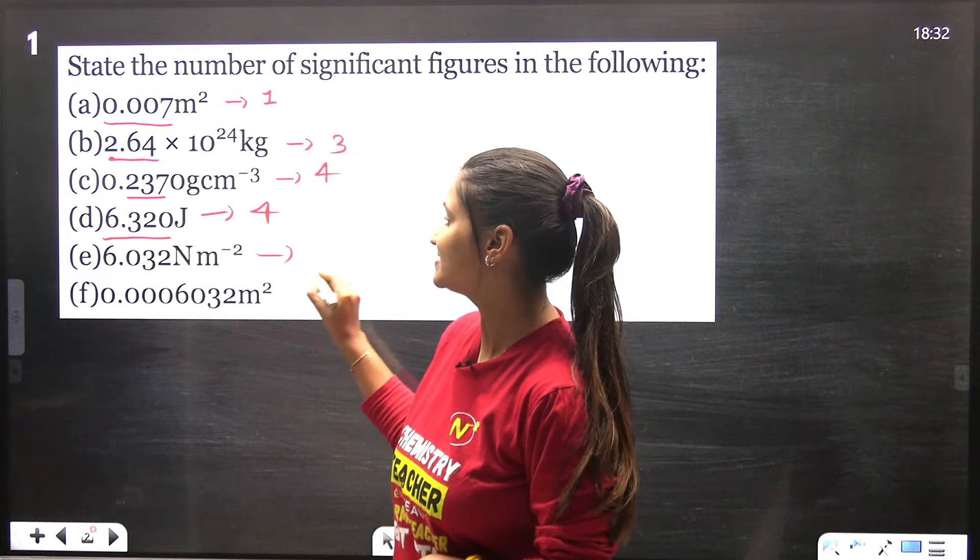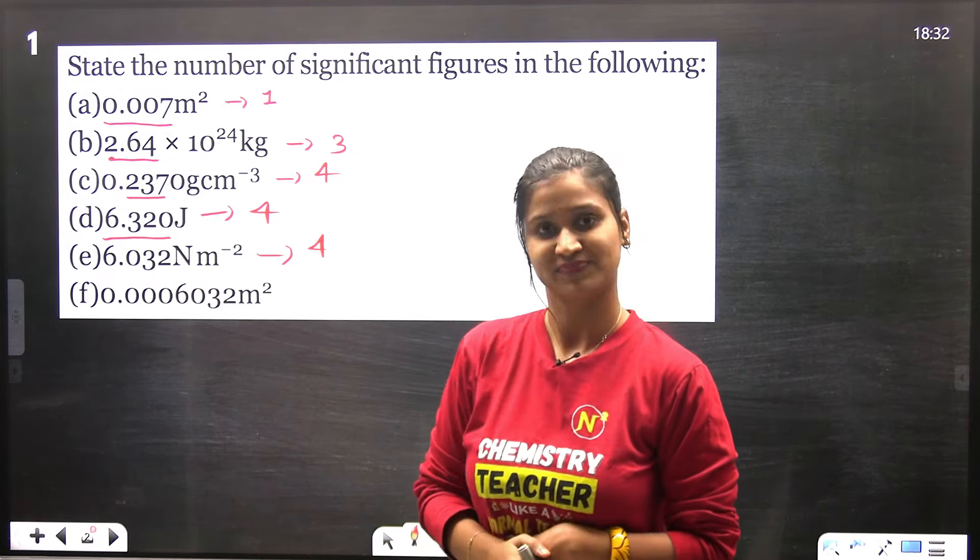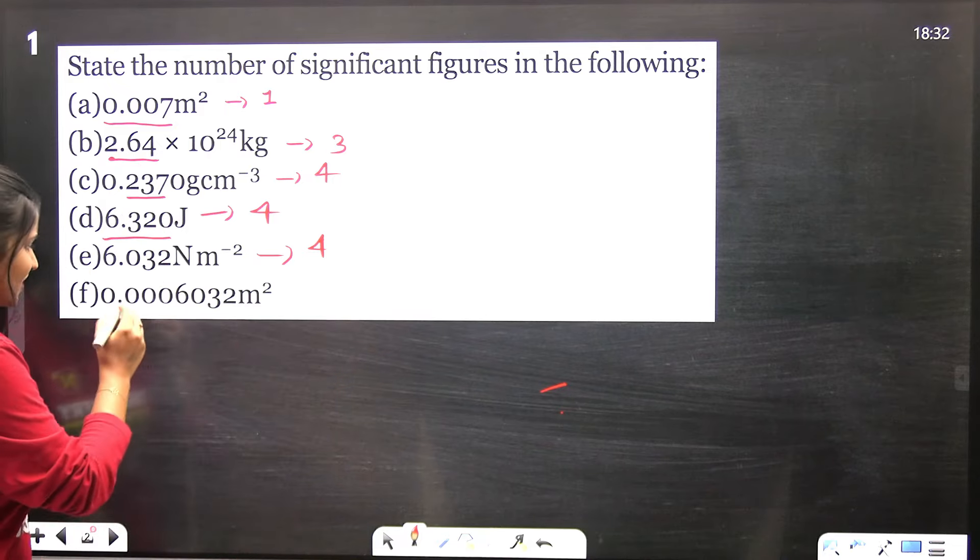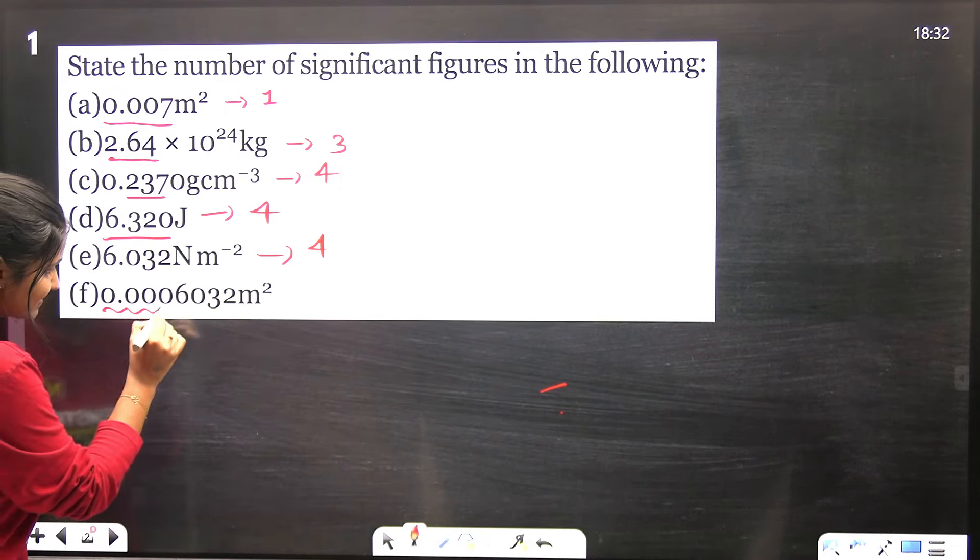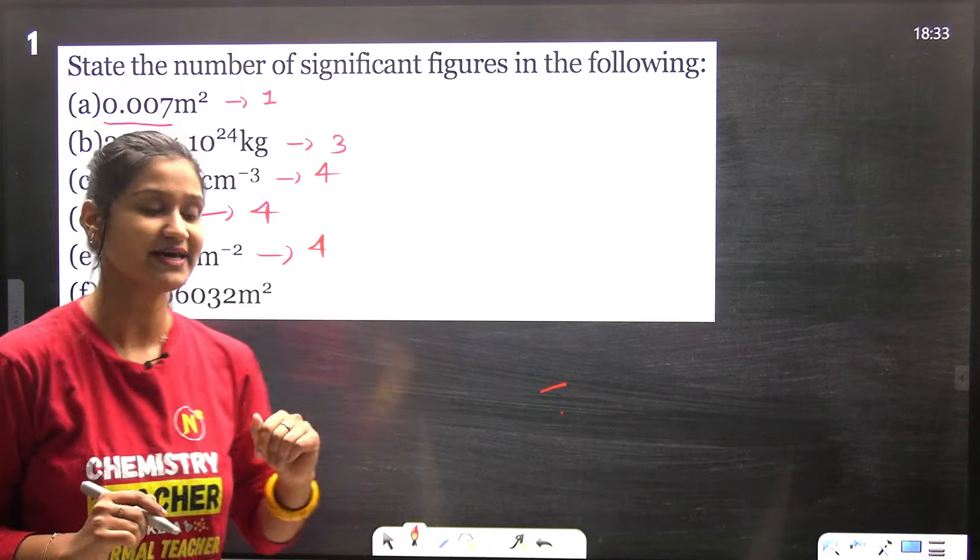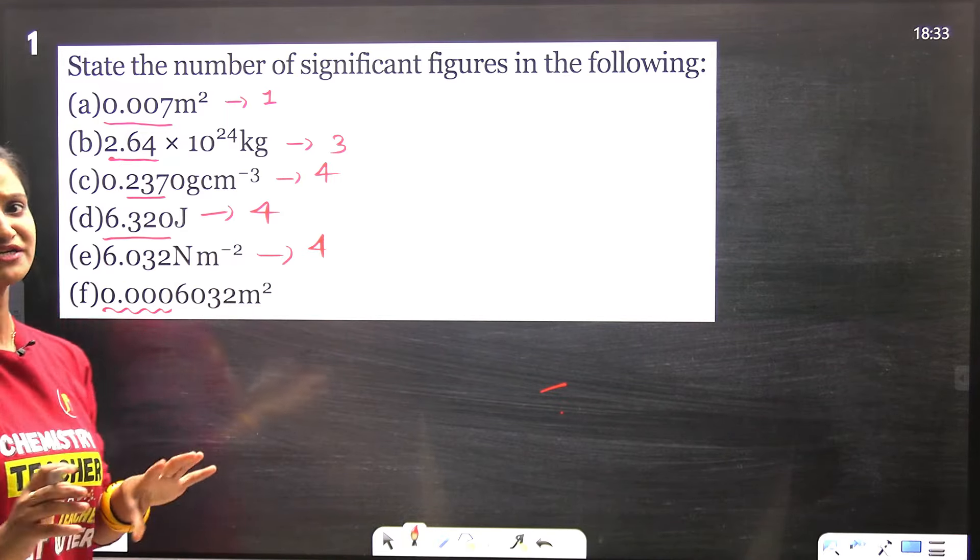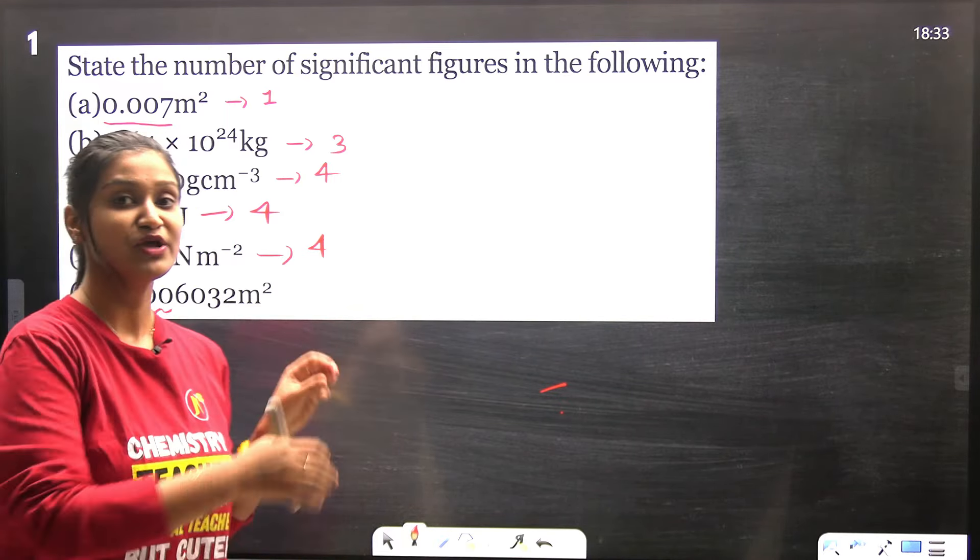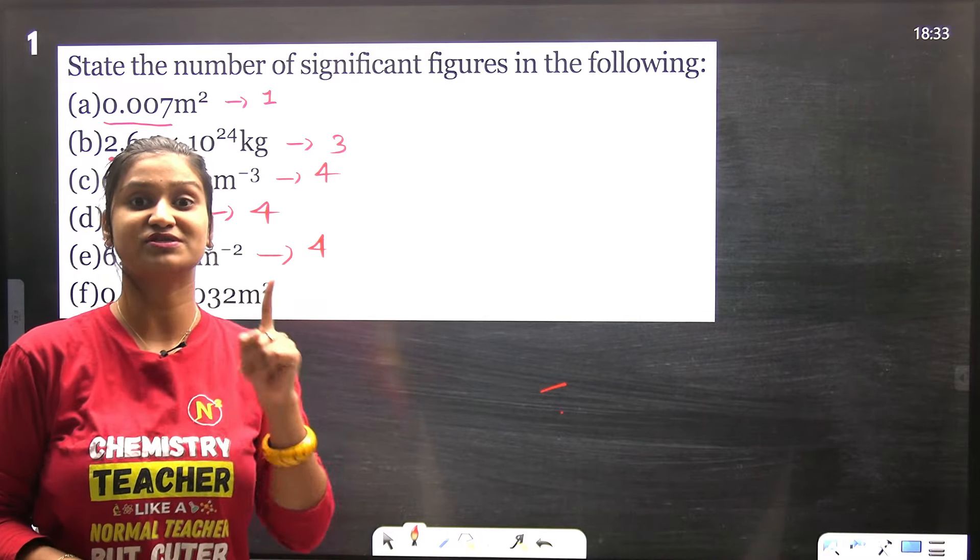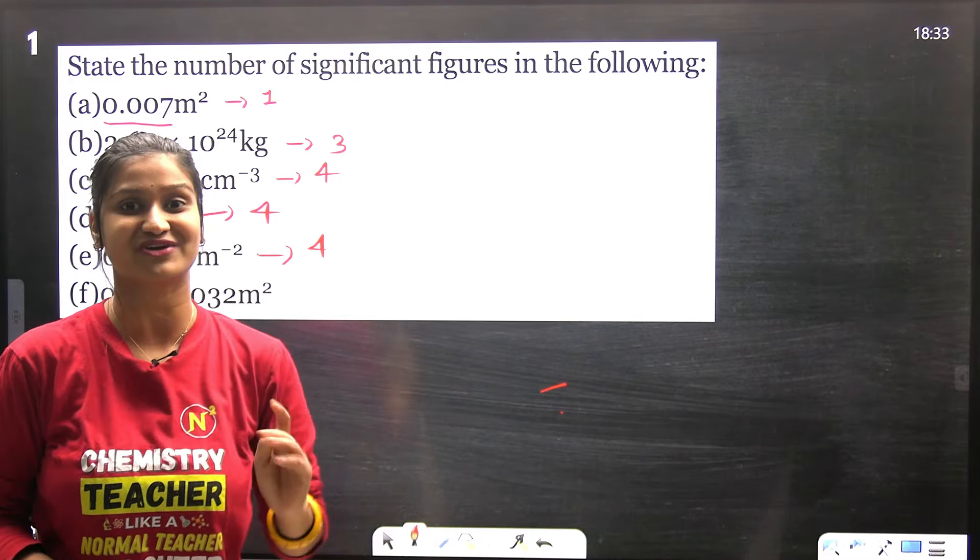So here also there will be four significant figures. Let's look at the last part, which is pretty interesting. The zeros before the decimal are not significant, because the zero before the decimal point is not significant anyway. And the zeros after the decimal that are significant are only trailing zeros.